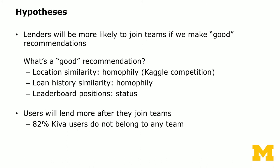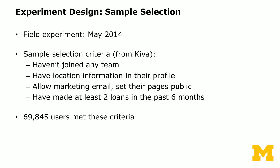We decided to use recommender systems. We look at recommendations based on three algorithms: location similarity, loan history similarity, or leaderboard position. Location similarity refers to when a lender lives close to a team of lenders. Loan history similarity means they've made similar loans in the past. Leaderboard position captures status — higher-ranked teams have higher status in the Kiva community. So we decided to design a field experiment.